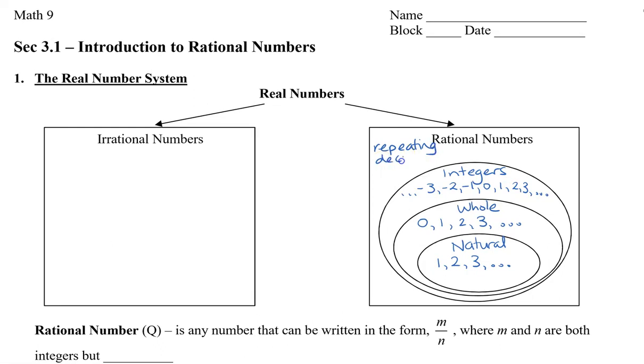So any of the numbers that repeat, such as 0.5 with a repeat, those are called repeating decimals, and they are rational numbers. We also have fractions. So any number that can be written as a fraction is also called a rational number, such as 5 over 9.